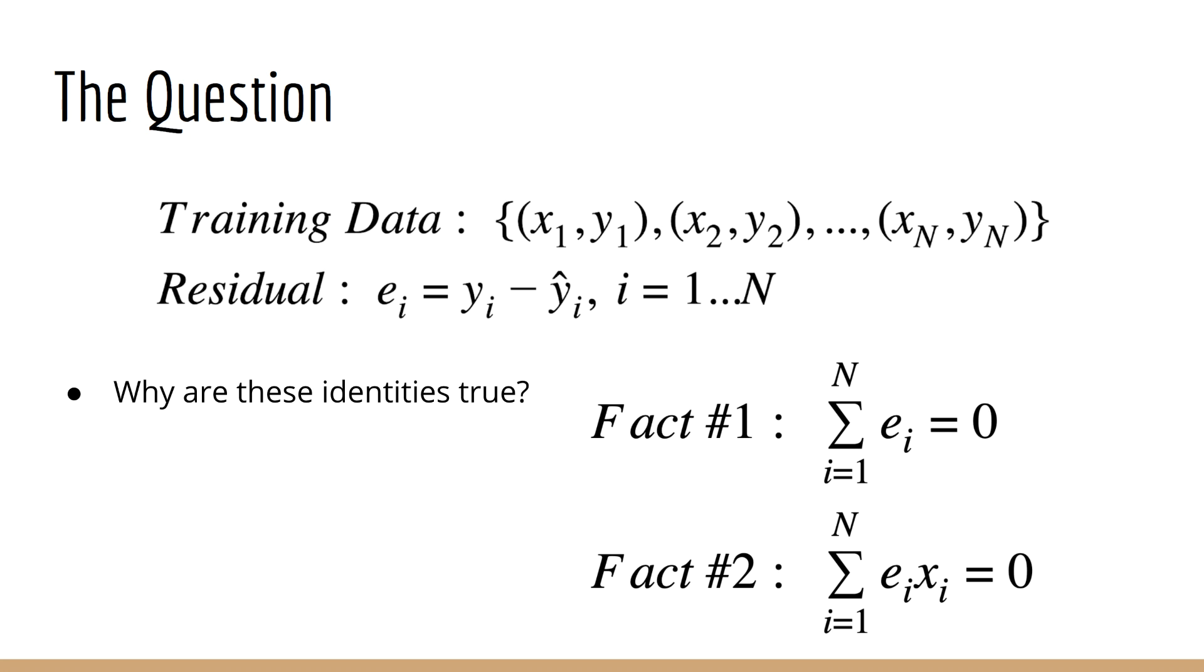Now it might surprise you to learn that we can come up with these two identities involving the residuals. First the sum of all the residuals is zero and second the sum of all the residuals multiplied by the corresponding input data is also zero. Now if you're like me you are probably very surprised by this. It's not at all obvious why the errors not squared would sum up to equal zero and even more surprisingly that when you multiply them by the input data you still get zero. So what's the solution? Can you explain why these identities are true?